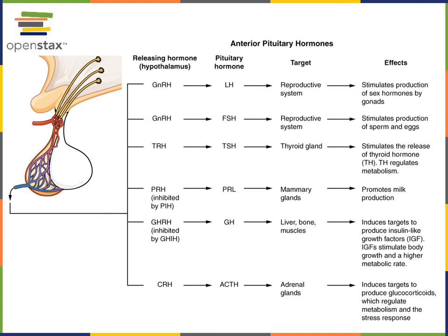Thyrotropin-releasing hormone (TRH) is the releasing hormone from the hypothalamus that stimulates the anterior pituitary to make thyroid-stimulating hormone (TSH). TSH then stimulates the thyroid gland to release the thyroid hormones T3 and T4 — T4 stands for thyroxine and T3 for triiodothyronine. These thyroid hormones T3 and T4 regulate metabolism by increasing the metabolic rate.